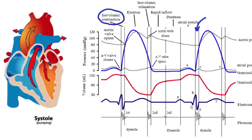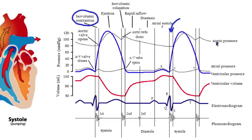Isovolumetric contraction is when the atrioventricular valve and the semilunar valve are closed as there's a buildup in pressure. You can see there's a significant increase in pressure during this stage of isovolumetric contraction. The volume of blood in the ventricles is staying the same, so the left ventricular volume stays constant. At a certain point, we will have enough pressure in the ventricle to cause the semilunar valve to open. The aortic pressure is somewhere around 80 millimeters of mercury, so once we have enough pressure to overcome that, the valve opens.